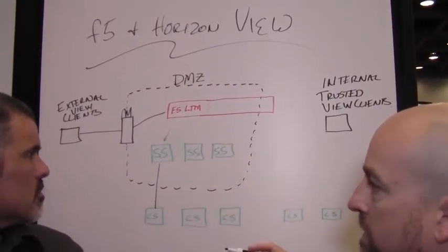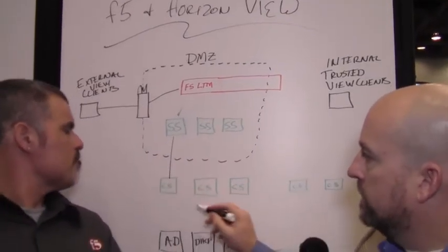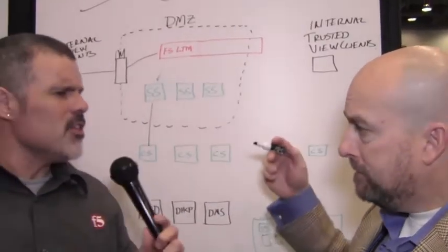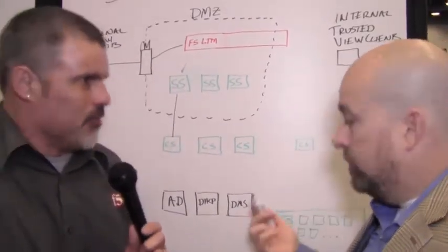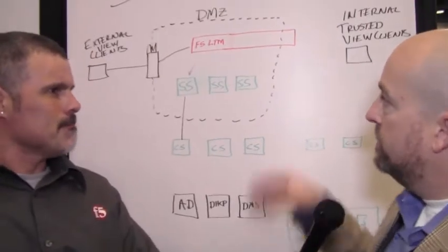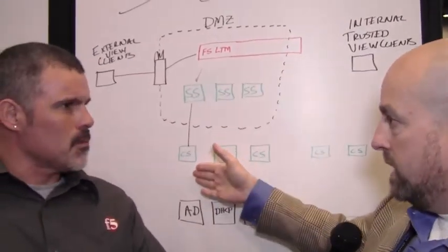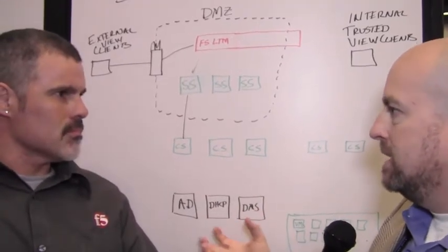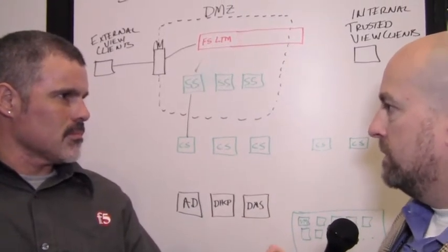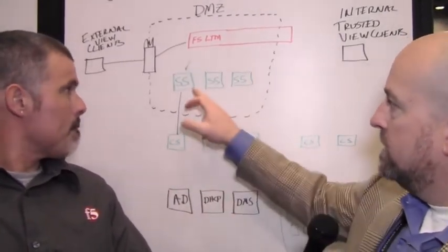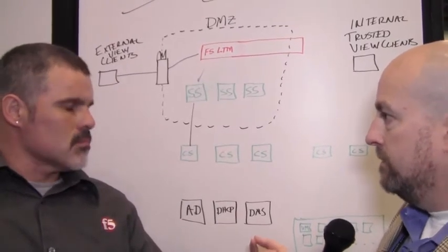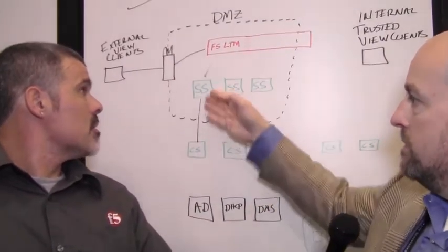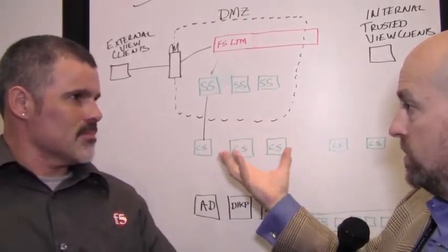One of the things in this architecture that's specific to View is that the security servers are paired one-to-one with their connection servers. A connection server lives in the main server VLAN, the security server resides in the DMZ. The security server provides security for the environment. Traffic hits the security server, it passes authentication information onto the connection server. The connection server is the one that talks to Active Directory, DHCP, DNS - those sorts of things.